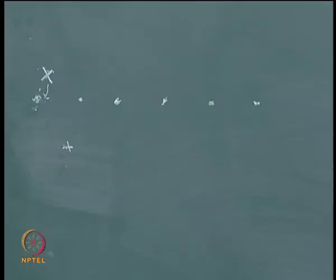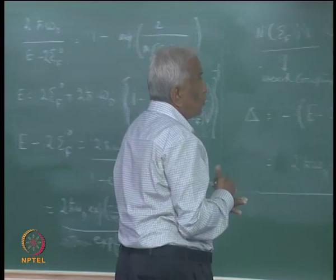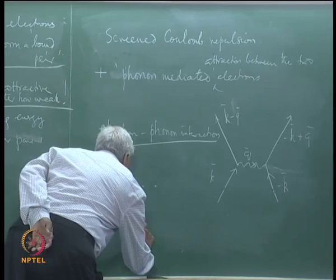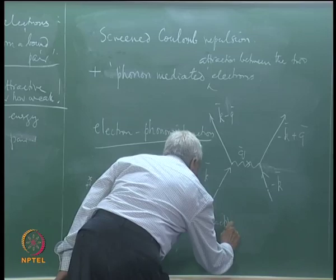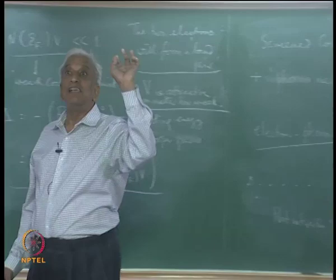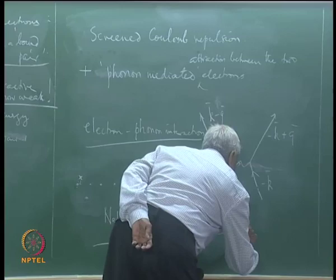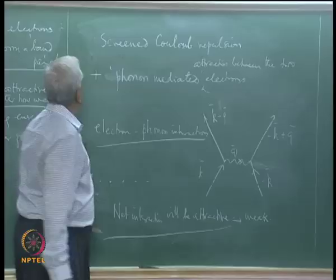In practice, this means that if you have a lattice of positive ions and an electron nearby, the electron-phonon interaction causes a Coulomb attraction of the electron toward the positive ion, displacing it from equilibrium. Another electron with wave vector −k sees this change in the position of the positive ion and also gets attracted toward it. This constitutes an interaction between the two electrons mediated by the displacement of the positive ion — this is the phonon mechanism of electron-electron interaction. If this phonon-mediated attraction just overcomes the screened Coulomb repulsion, the net interaction will be attractive, even if very weak.